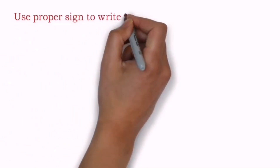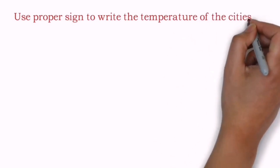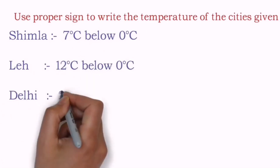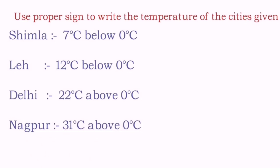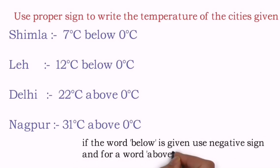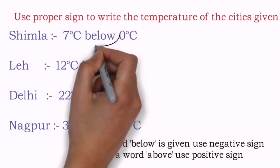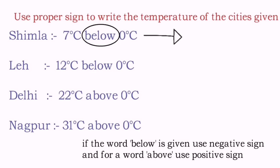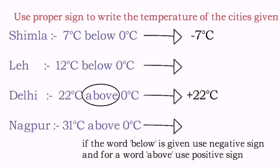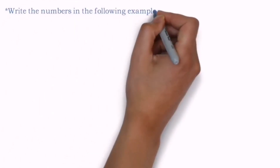The next activity: use a proper sign to write the temperature of the cities. As sir informed you — if the temperature is below zero degrees we have to write a minus sign; if it is above zero degrees we have to give a positive sign. In Shimla we have seven degrees Celsius below zero, so we give a negative sign: the answer is minus seven degrees Celsius. The second one is for you. The third one shows above zero degrees Celsius, so sir is going to write positive 22 degrees Celsius. The remaining questions are there for you to enjoy.